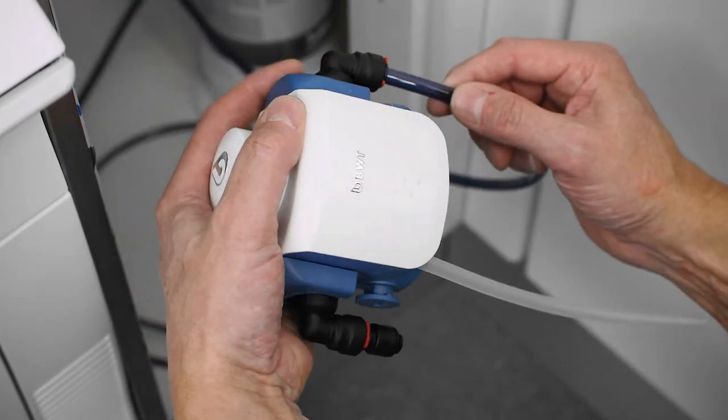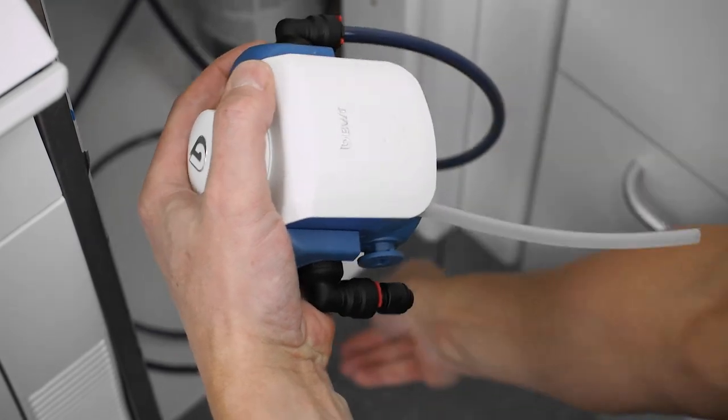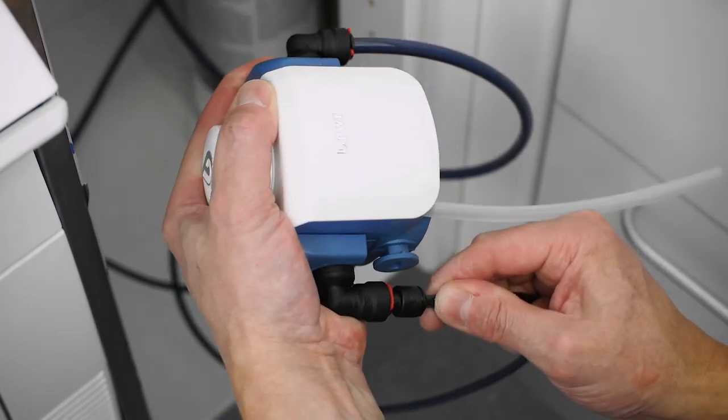Connect the other 8 mm hose from the pressure tank to the white filter head. Connect the 6 mm hose to the plastic reduction fitting. This will supply the clinic's autoclaves.